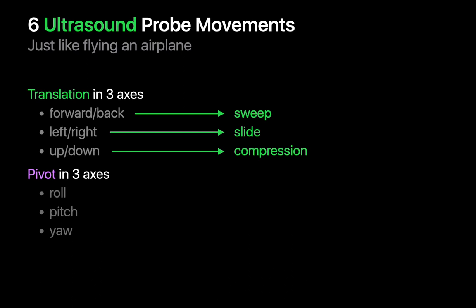The correlate to forward and back is called sweeping. The correlate to left-right is called sliding. And the correlate to up-down is called compression.